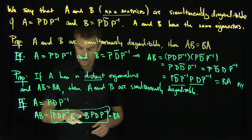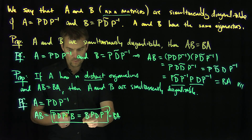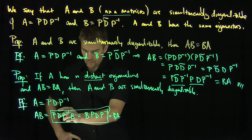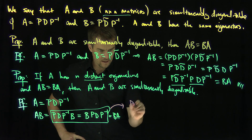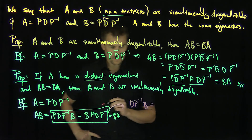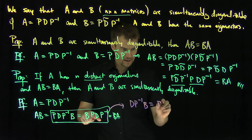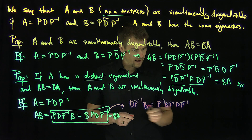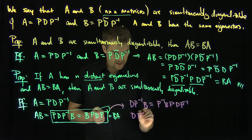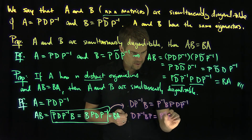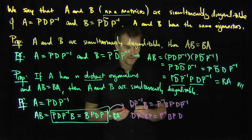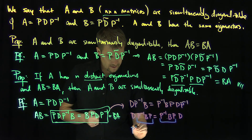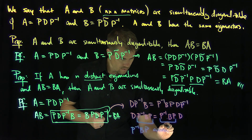What we want to show is that B commutes with PDP inverse. Hitting both sides on the left with P inverse gives us D P inverse B equals P inverse B P D P inverse. Then hitting on the right with P gives D P inverse B P equals P inverse B P D. In other words, P inverse B P commutes with D.